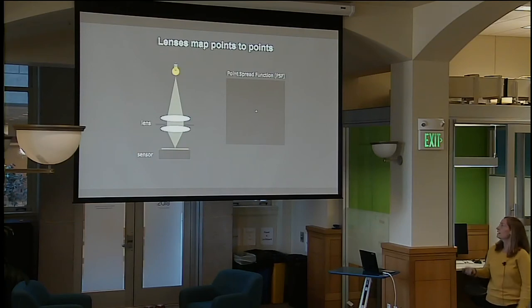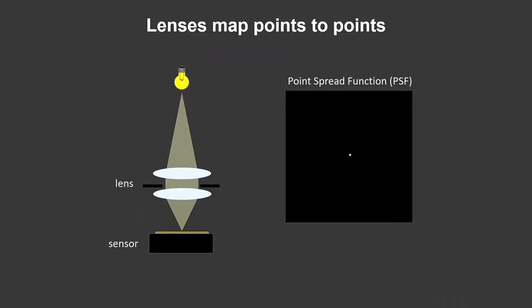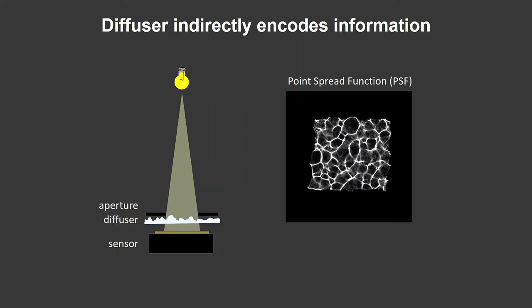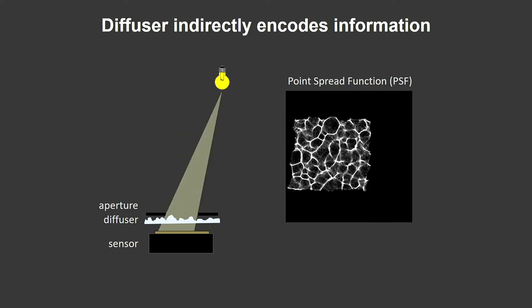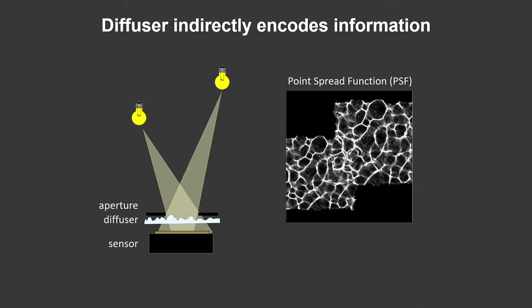A typical camera maps a point in the scene to a point on the measurement — that's the whole point of a lens. This multiplexed camera maps a point in the scene to a weird pattern on the sensor — we call this a caustic pattern, the point spread function. The cool thing is that when I move the point in the scene, the point spread function shifts. As long as every point in the scene maps to a different measurement, I can solve the problem. It's the same measurement shifted — and if you have two points, you get the linear sum. It's a linear problem.